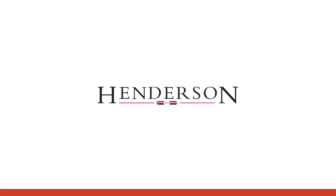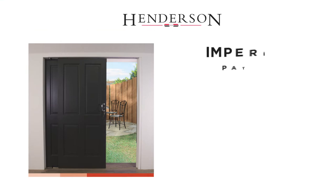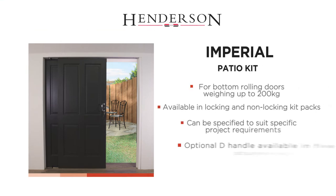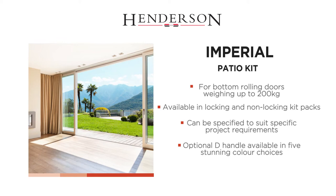PC Henderson's Imperial system is ideal for bottom rolling doors weighing up to 200kg. The bottom rolling hardware carries the weight of the doors at the bottom of the system, making it ideal for applications where there is insufficient structural support for a top-hung system.